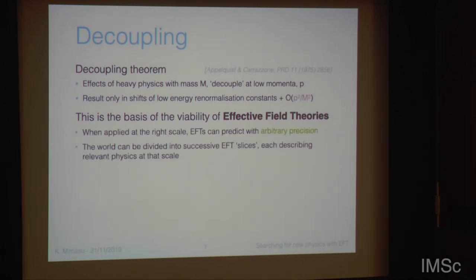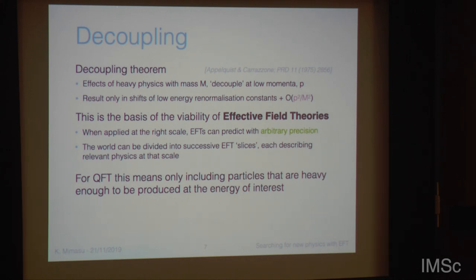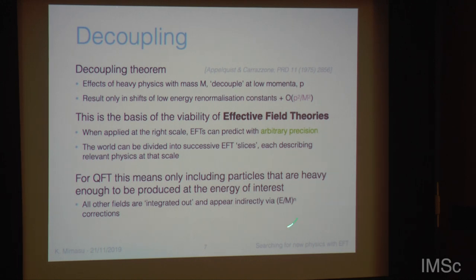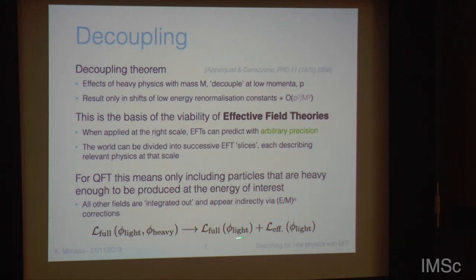This is really the basis of the viability of effective field theories. If you apply them at the right scale, these EFTs can predict things with essentially arbitrary precision. You can think of the world as being divided into successive slices of EFTs, each describing different relevant physics at that scale. For BSM physics, this means only including particles that are light enough to be produced at the energy of interest. Your heavier fields are integrated out and appear indirectly via power corrections in energy over the heavy mass.